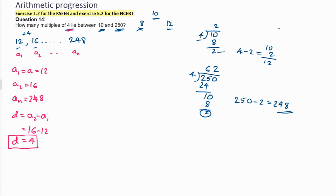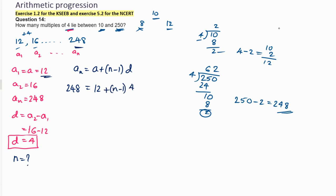Now we apply the formula to find how many terms there are — we need to find n. The formula is: an = a + (n − 1) × d. Here an = 248, a = 12, d = 4. Shifting 12 to the other side: 248 − 12 = (n − 1) × 4, so 236 = (n − 1) × 4.